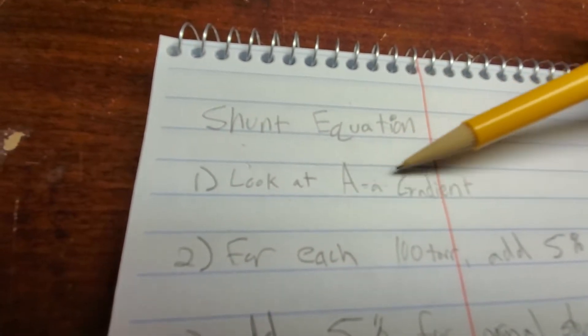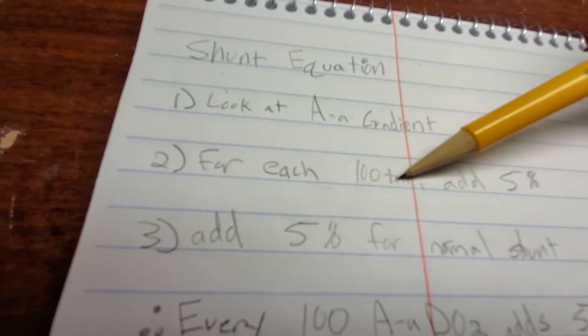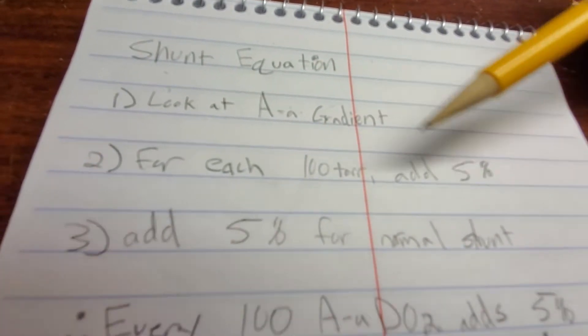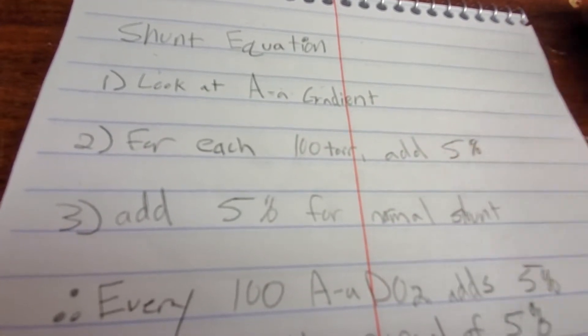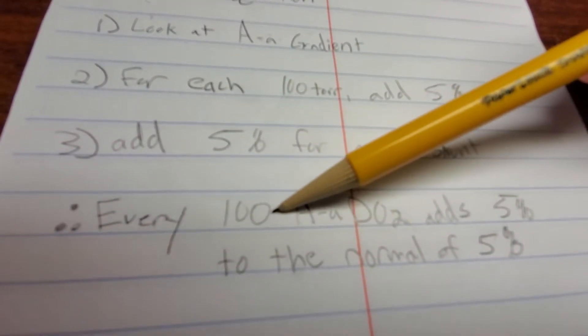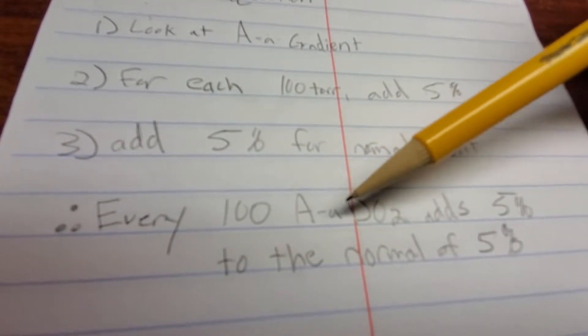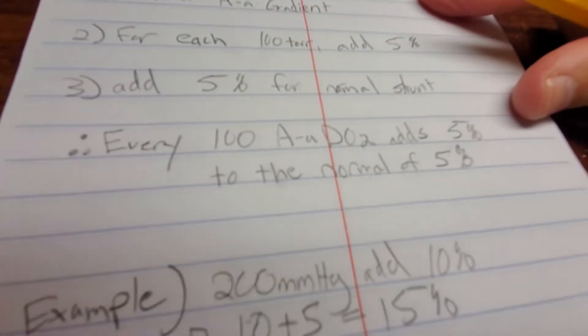So first, look at your AA gradient. All you have to do is for each 100 torr, you add 5%. Add 5% for a normal shunt, and that's all you have to do. So for every 100 torr of your AA, AA minus aDO2 adds 5%.